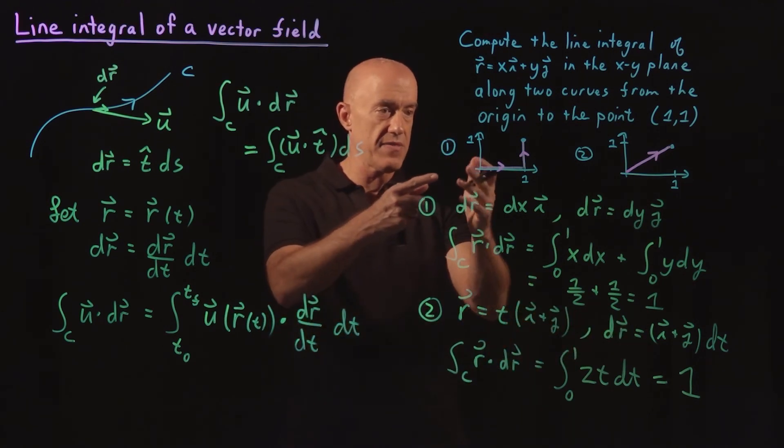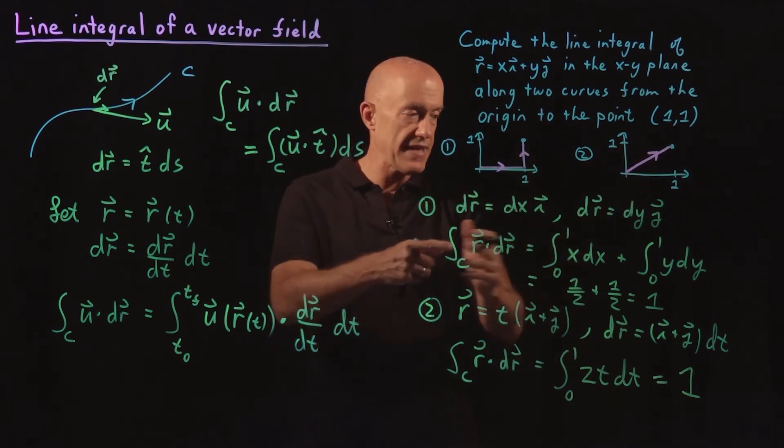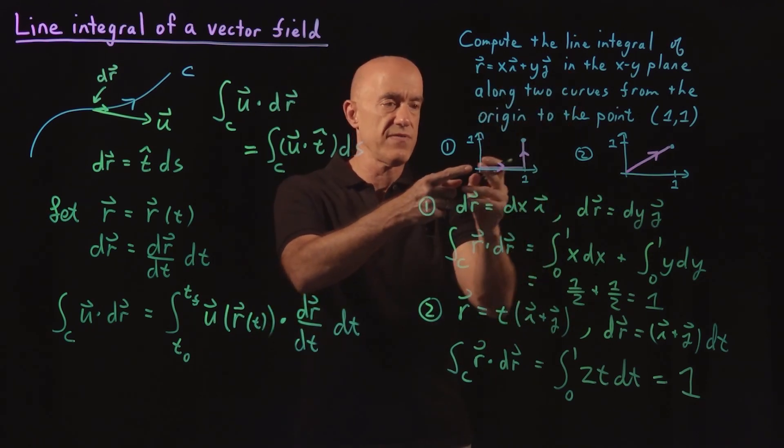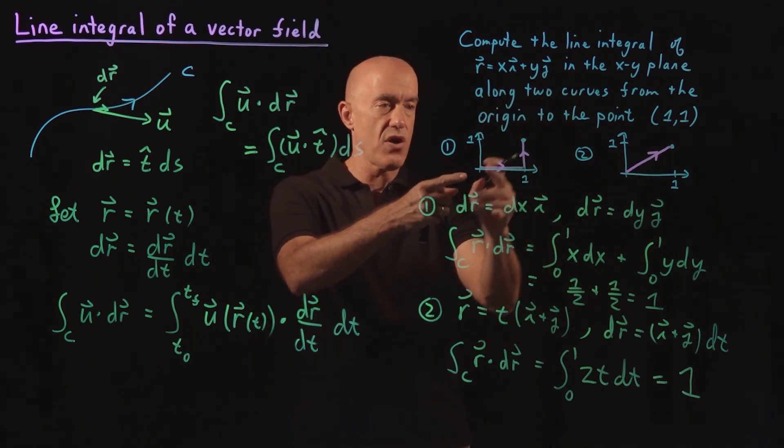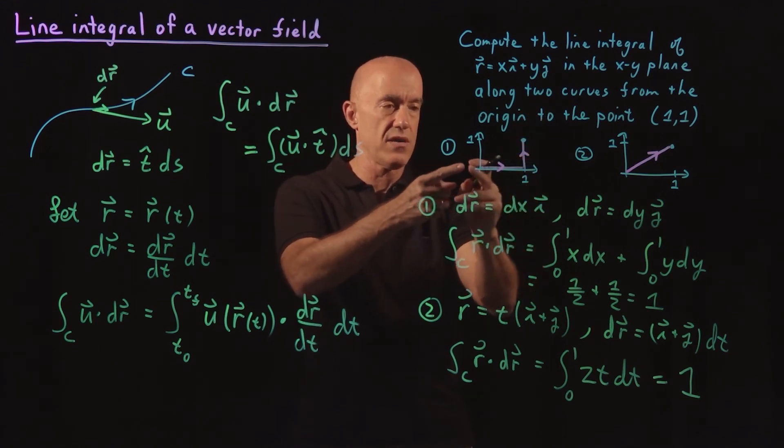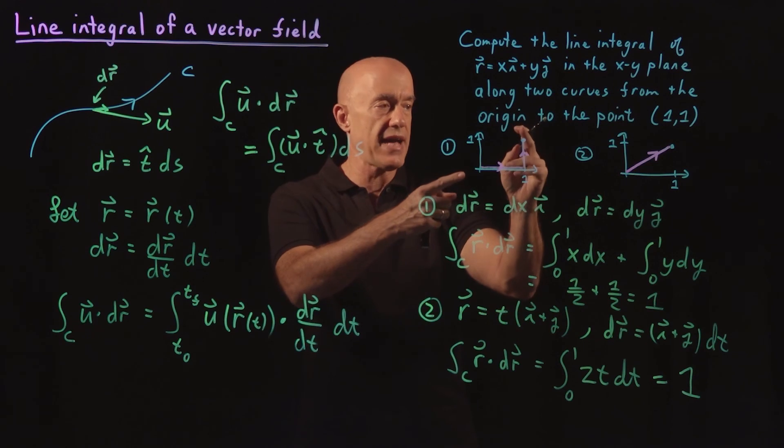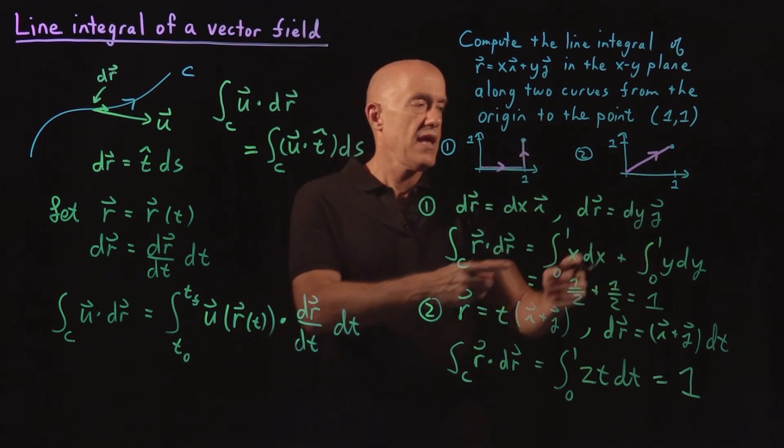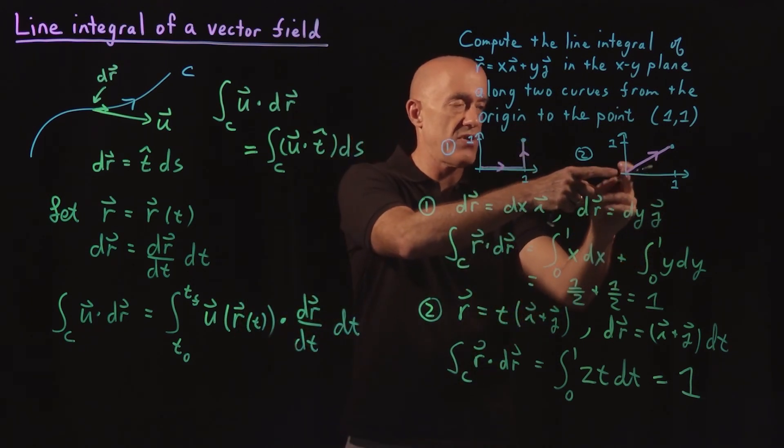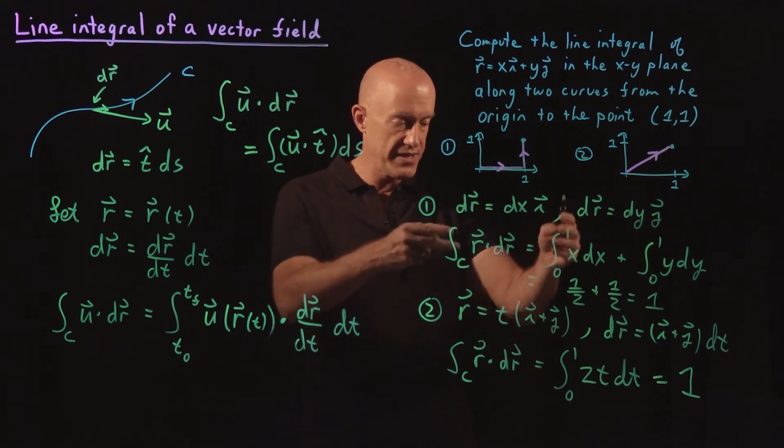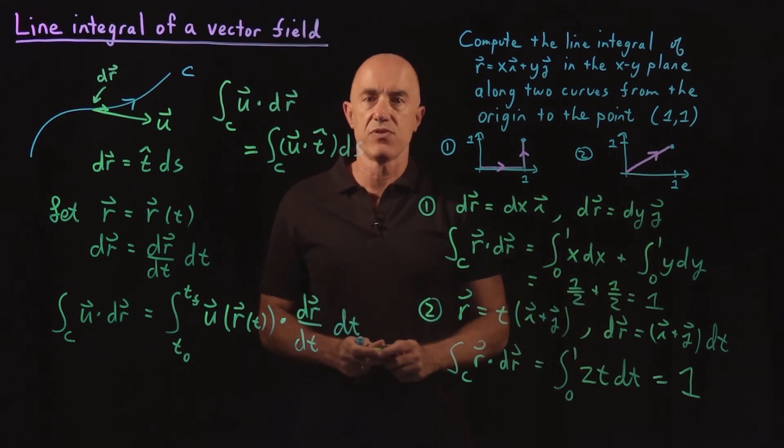So using these two curves, we get the same result. The line integral of the position vector from the origin to (1,1) along the first curve, along the x axis then up the y axis, is 1. And the same way if we just went from the origin to (1,1) directly. Two different parametrizations of our curve. We did the integral and we got the same result.